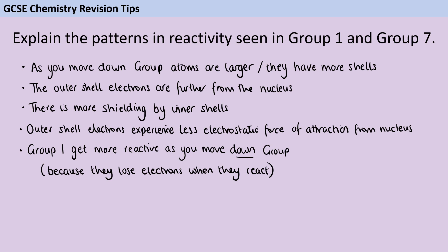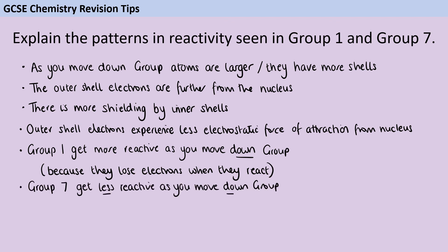In contrast to that, group seven get more reactive as you go up the group — or phrased the other way around, they get less reactive as you go down the group. The reason for this is that when group seven react, they are gaining an electron.